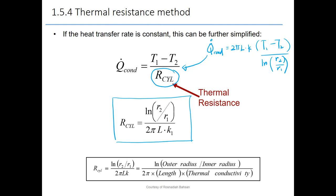To transfer this equation into the thermal circuit or thermal resistance method form — by rearranging 2πLK — we confirm that ln(R2/R1) divided by 2πLK is the thermal resistance for the cylindrical shape. This is how to find R_cylindrical.